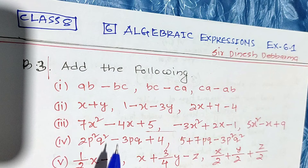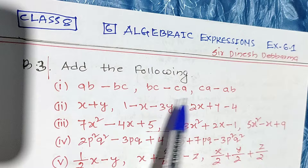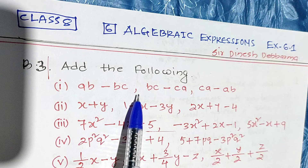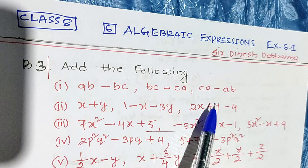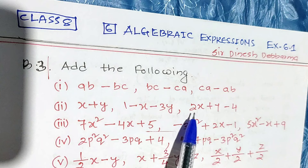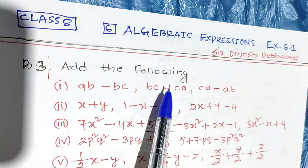In the following, we have to do additions. In each of the questions, you find some groups of expressions separated by commas. Each question has two or three algebraic expressions. We need to add them. Let us do them one by one.